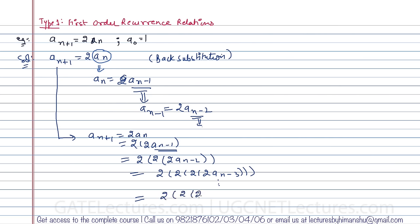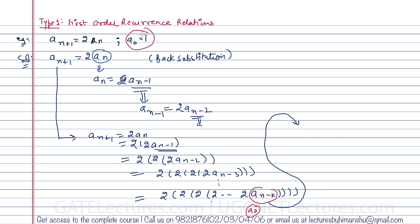This continues until we reach 2·2·2·...·2·a(n-k). We can only eliminate the a(n-k) term by making it a(0), since we already know that value. So we expand up to the k-th term and set k = n, giving 2·2·2·...·a(n-n).